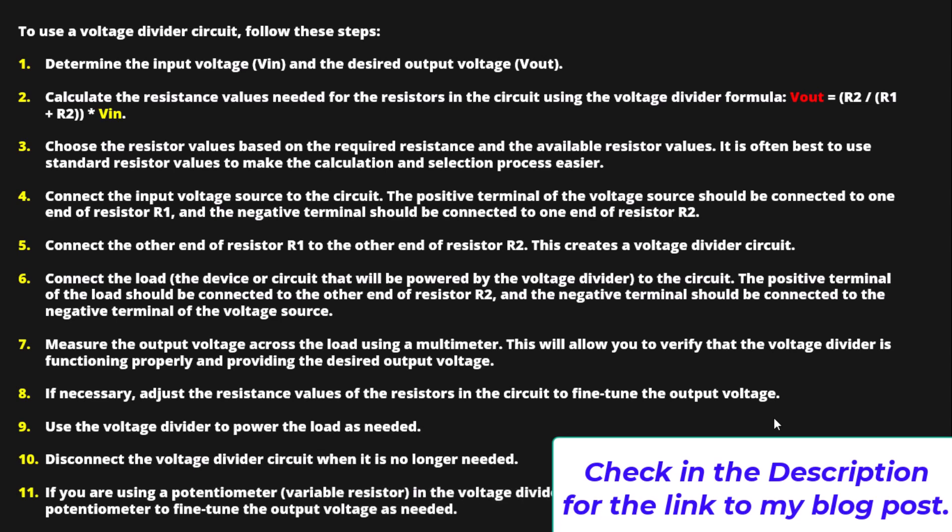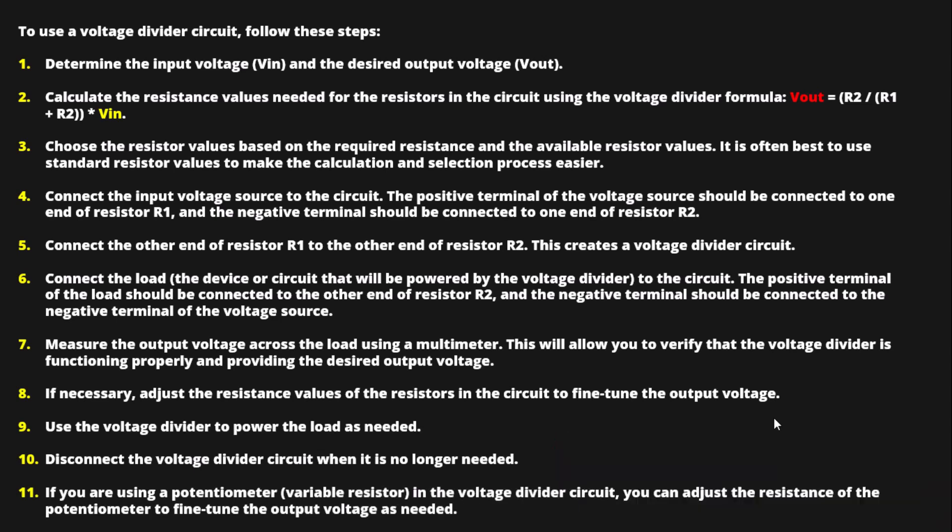If you are using a potentiometer — that is, a variable resistor — in the voltage divider circuit, you can adjust the resistance of the potentiometer to fine-tune the output voltage as needed.